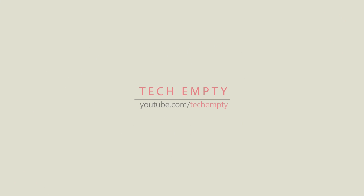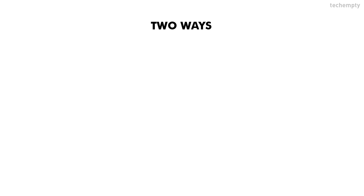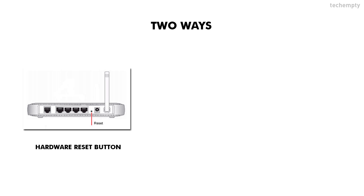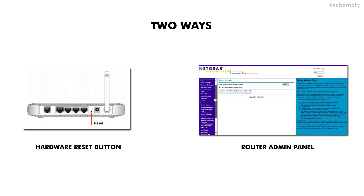So, without any further ado, let's get started. There are two methods of restoring your router to the factory default settings. First is via a hardware button of the router, and the second one is via the router admin control panel.